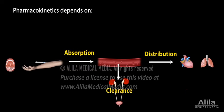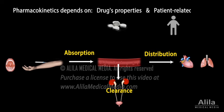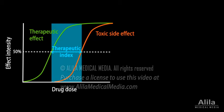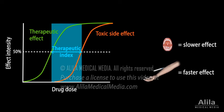Pharmacokinetics of a drug depends on its properties as well as patient-related factors. For example, older patients or those with kidney or liver problems may have slower clearance rates, causing some drugs to stay longer in their blood. Knowledge of pharmacokinetics helps determine the optimal drug dosage for individual patients as well as the most suitable formulation and/or route of administration for a specific therapeutic goal.